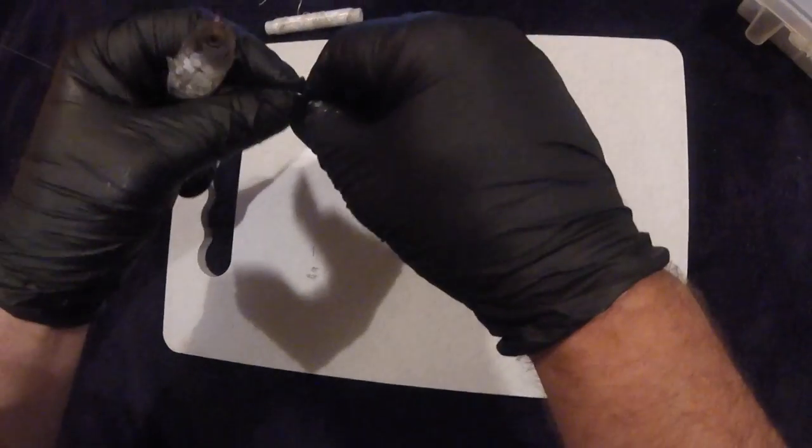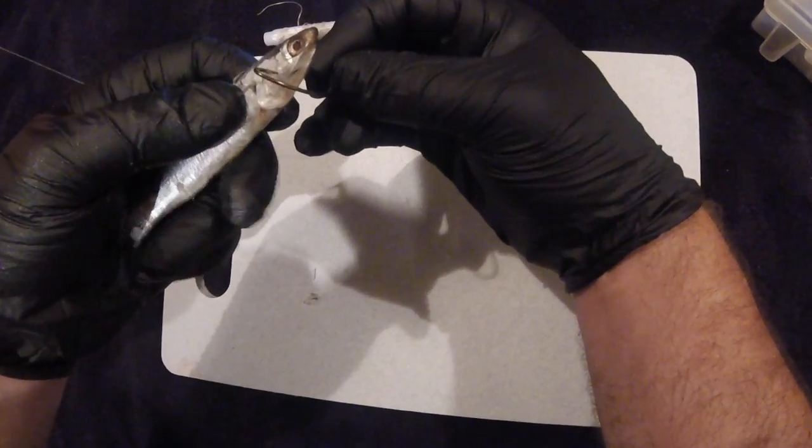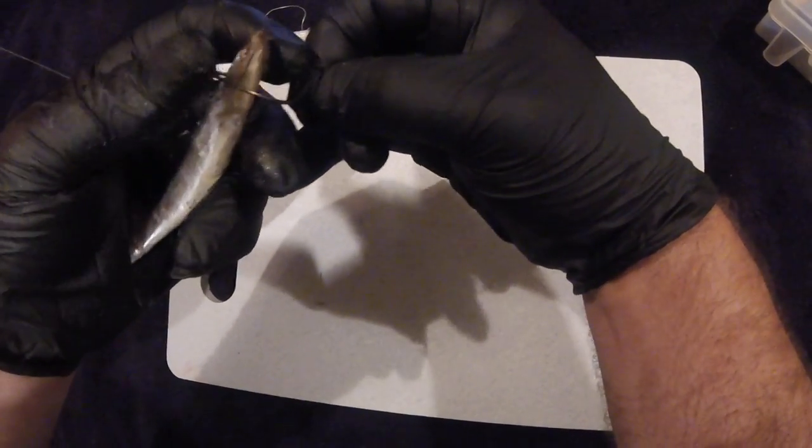So, you've got your anchovy, you've got your hook. Step 1 is you're going to go through the anchovy, right in the middle of the head. You can go all the way through.